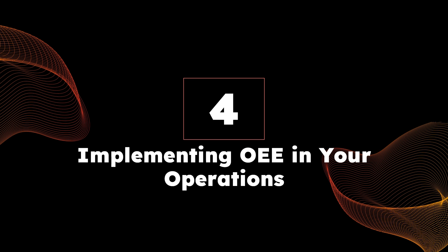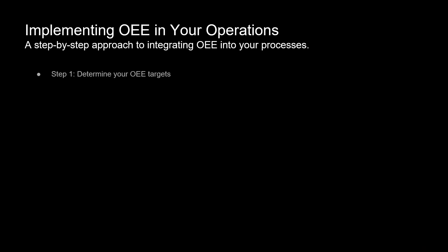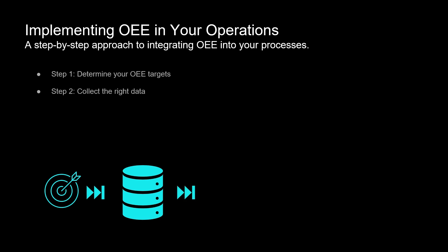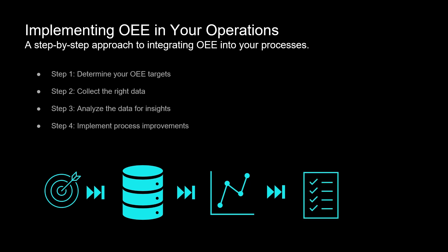But how do you go about implementing OEE in your factory? You can easily implement OEE by following these steps. Step 1: set clear goals. Step 2: collect data — ensure you have access to accurate data from your production process. Step 3: analyze the data for insights. Step 4: take action based on your data analysis to optimize your production processes. Step 5: maintain and improve performance over time.